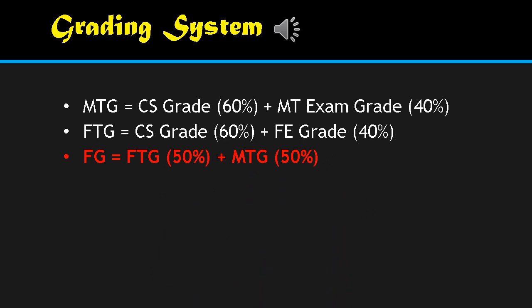For the grading system, the midterm total grade is composed of class standing at 60% plus the midterm exam at 40%. The same applies to the final total grade: class standing at 60% plus the final examination at 40%, totaling 100%. For the final grade computation, it is equal to 50% from the final total grade plus 50% from the midterm total grade, and averaging these gives your final grade.